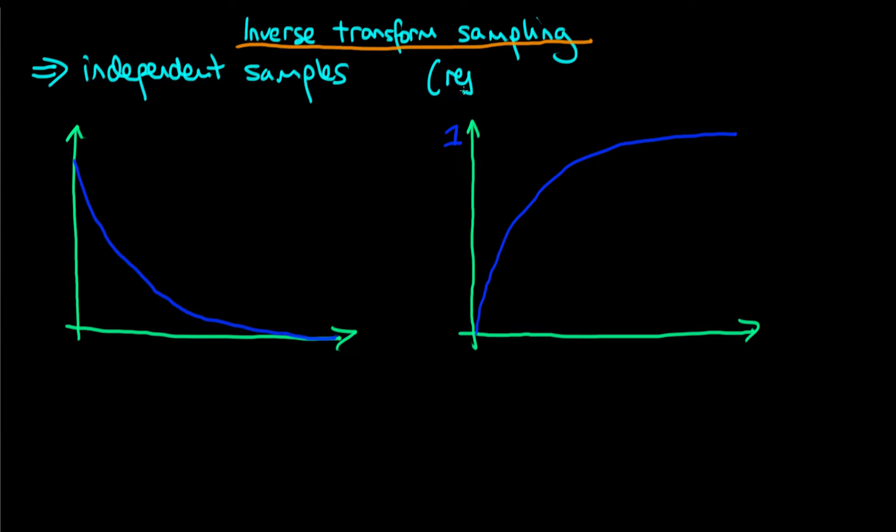The introduction of this other sampling method, at least in the order that I'm introducing it here, is motivated by the fact that we actually found that rejection sampling was very inefficient. In other words, we rejected a large proportion of our points and only accepted very few of them.